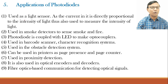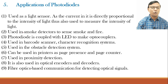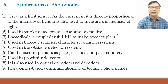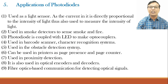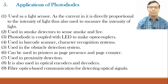The applications of photodiode: it is used as a light sensor, and since the current is directly proportional to the intensity of light, it is also used to measure light intensity. It is used in smoke detectors to sense smoke and fire. Photodiodes are coupled with LEDs to make optocouplers, which couple light to adjacent components. It is used in barcode scanners and character recognition systems, as well as in obstacle detection systems — when an obstacle cuts off the light, it can be detected.